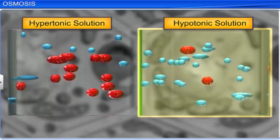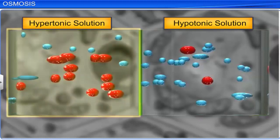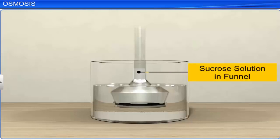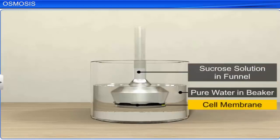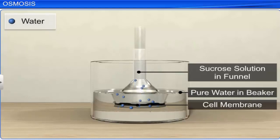A hypotonic solution is a solution that has more water and less solutes, whereas a hypertonic solution is one that has less water and more solutes. In an example of osmosis, a solution of sucrose in water is put into a funnel and separated from the pure water in a beaker by a semi-permeable membrane. The water, being hypotonic, will move from the beaker to the funnel containing the hypertonic sugar solution, raising the solution level in the funnel.